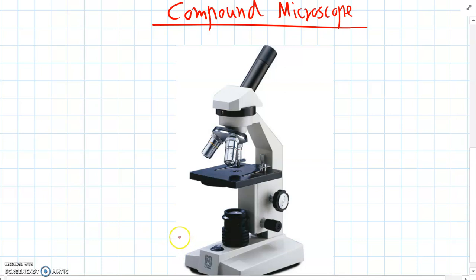So let's start at the bottom first. The bottom section is called the base. And there are a couple of parts on the base. Here we've got the switch which turns the light on and off.